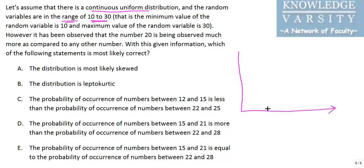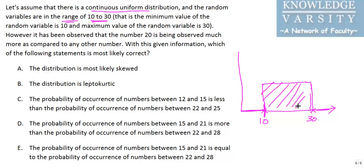The continuous uniform distribution looks like this — it spans from 10 to 30. The probability of any number less than 10 will be 0, and the probability of any number greater than 30 will also be 0. For any continuous uniform distribution, the total probability is given by the area under the curve, and that area equals 1.